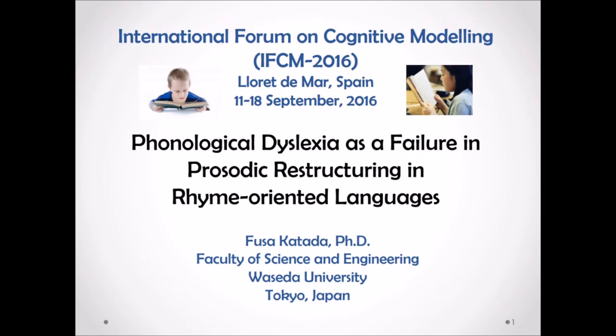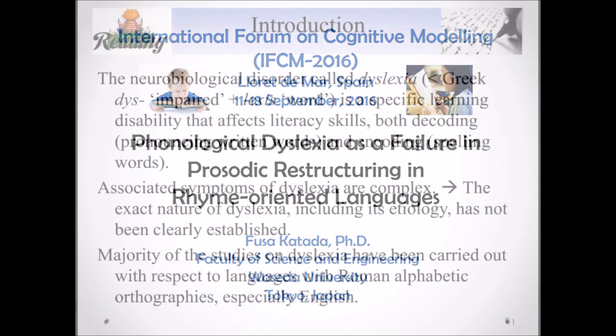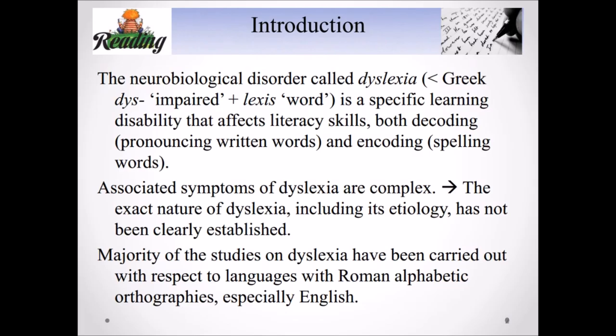So I'd like to start this introduction. The neurological disorder called dyslexia, which comes from Greek dys and lexis, is a specific learning disability that affects literacy skills both decoding and encoding. Associated symptoms of dyslexia are pretty complex, and the exact nature of dyslexia, including its etiology, have not been clearly established.